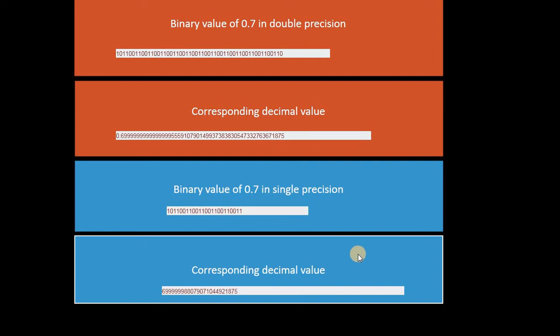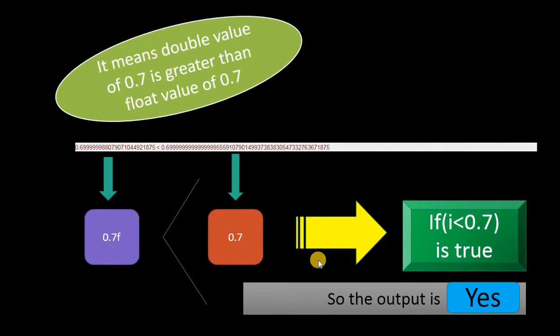So come to the conclusion. This is the value of 0.7 when you convert the binary value into decimal value, and this is the value of 0.7f when you convert the binary value into equivalent decimal value. So obviously this 0.7 is greater than 0.7f, which is equal to i. That means i equal to 0.7f.